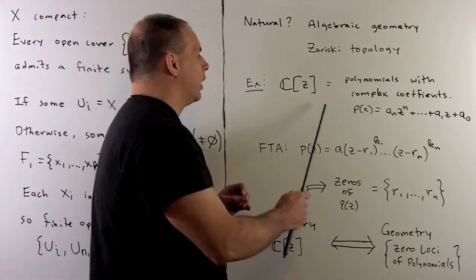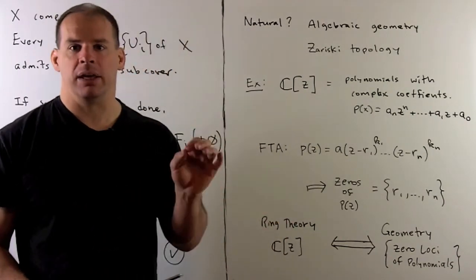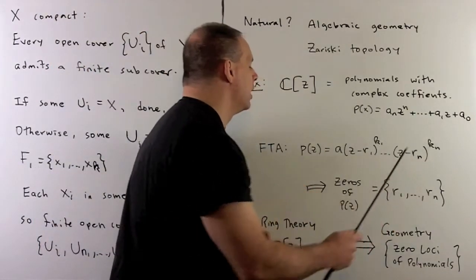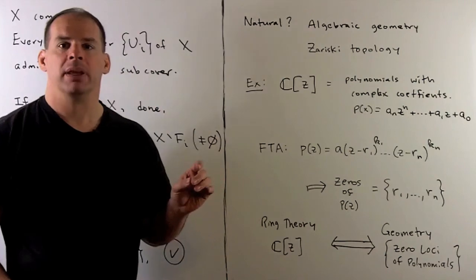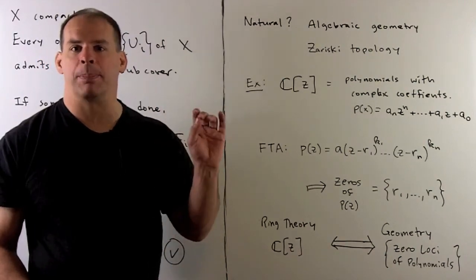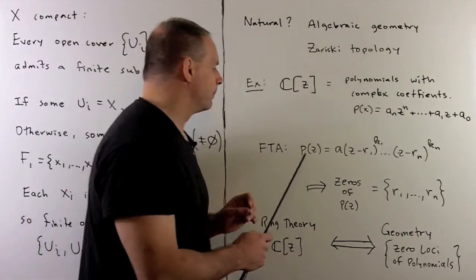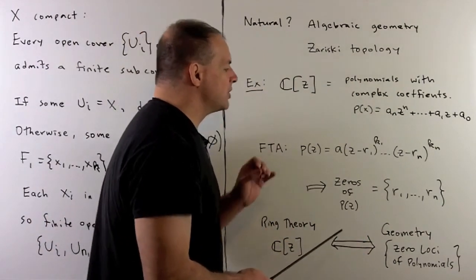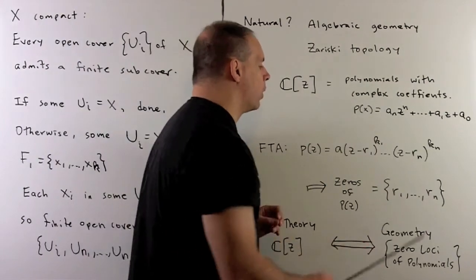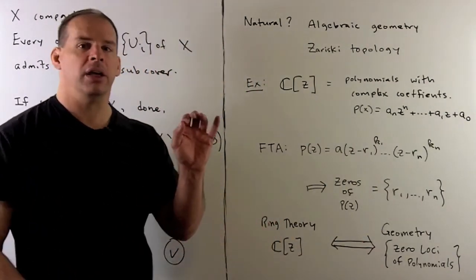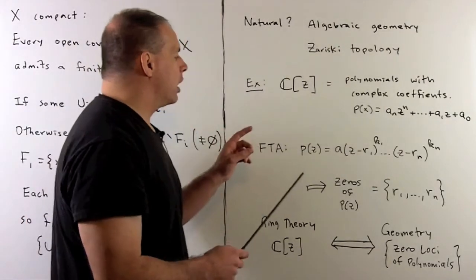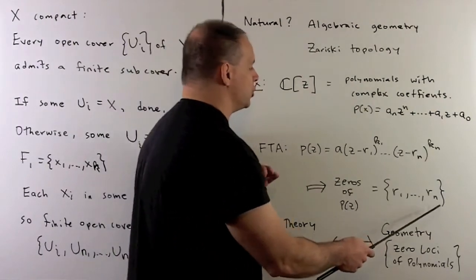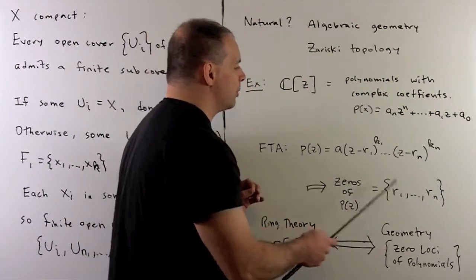I'll start with the ring of polynomials in Z with complex coefficients. So call that C[Z]. By the fundamental theorem of algebra, if P is non-constant, we can factor it completely into powers of linear factors. If we take the zeros of this polynomial, we're going to get a finite subset of the plane, R1 through Rn, our roots. So, what we've done here, I've gone from this ring C[Z] to our cofinite topology, just by taking zeros of polynomials.